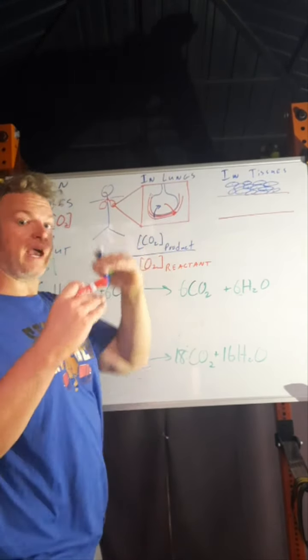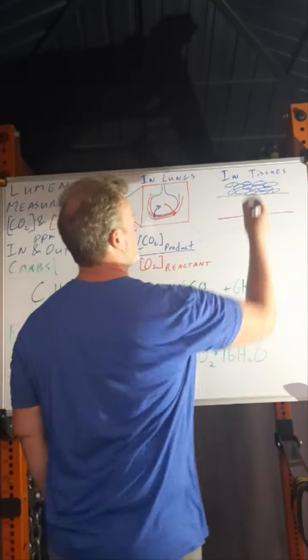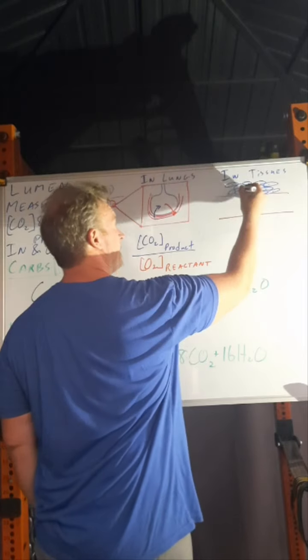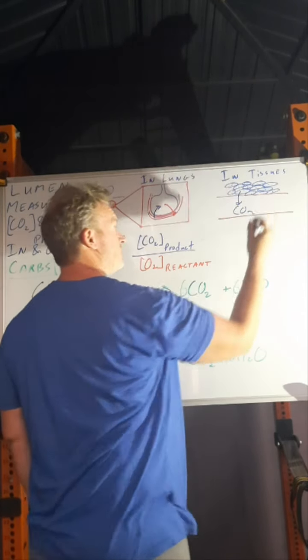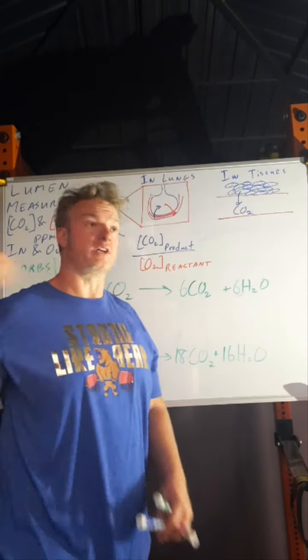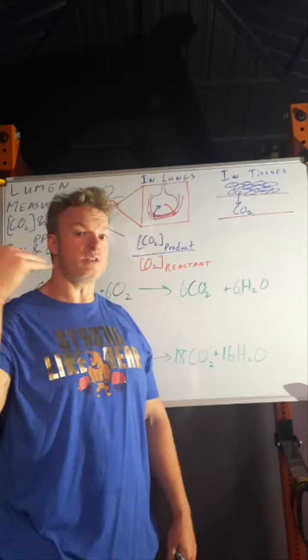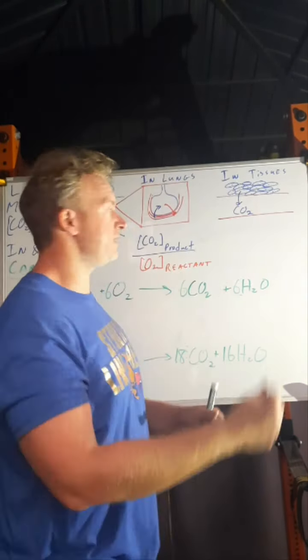Again, the gases will exchange based on their relative concentration gradients. If CO2 is high in these tissues, those gases will diffuse and CO2 will go into the blood vessel, eventually gets attached to the hemoglobin that's in the RBC on the iron atom to be exhaled.